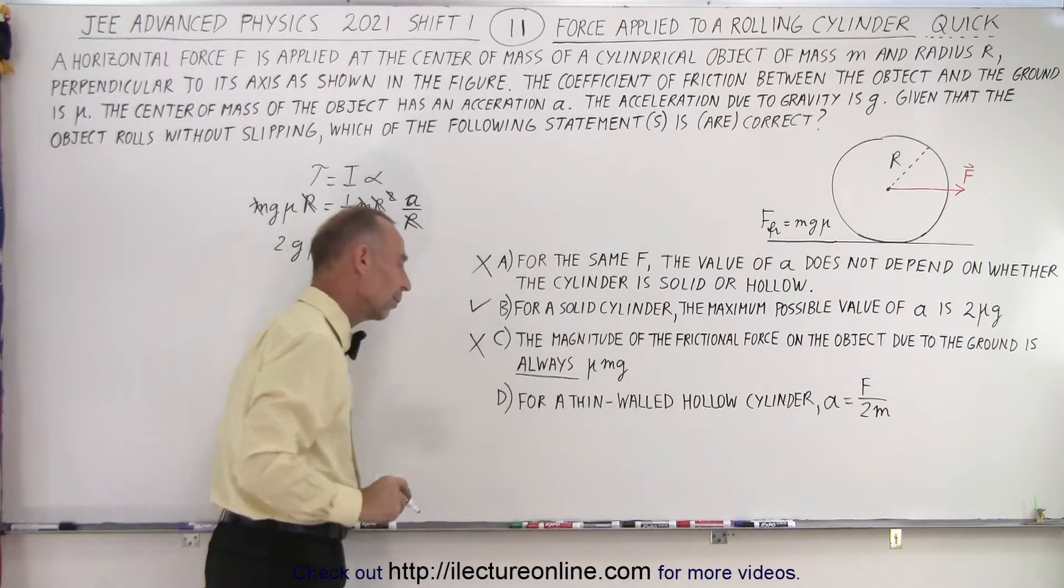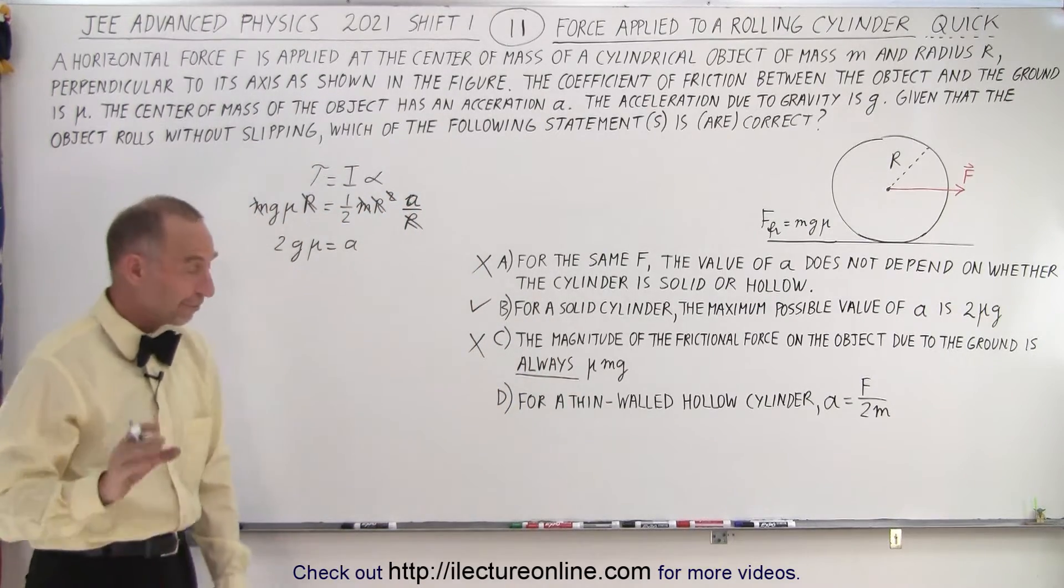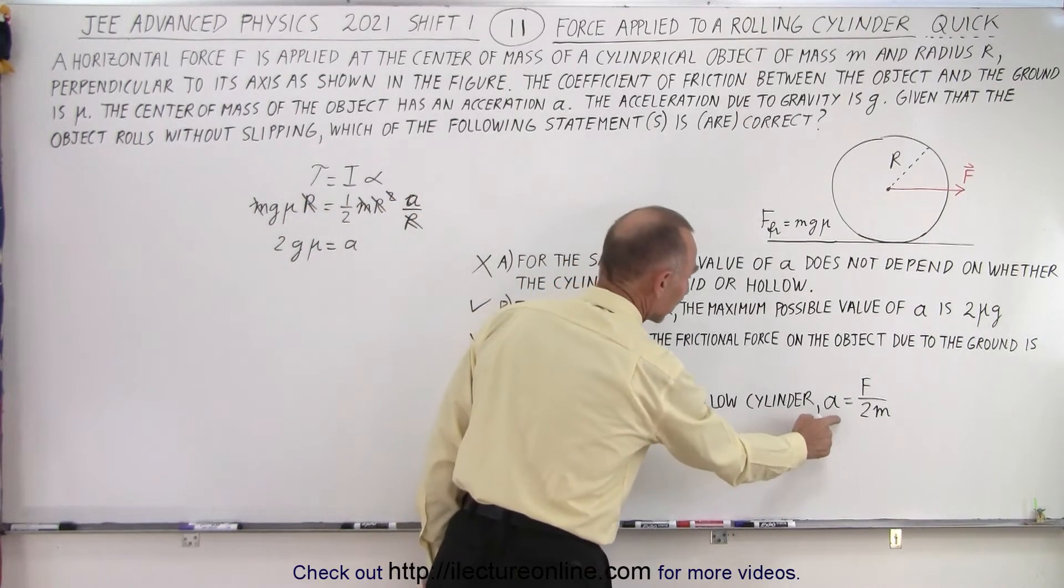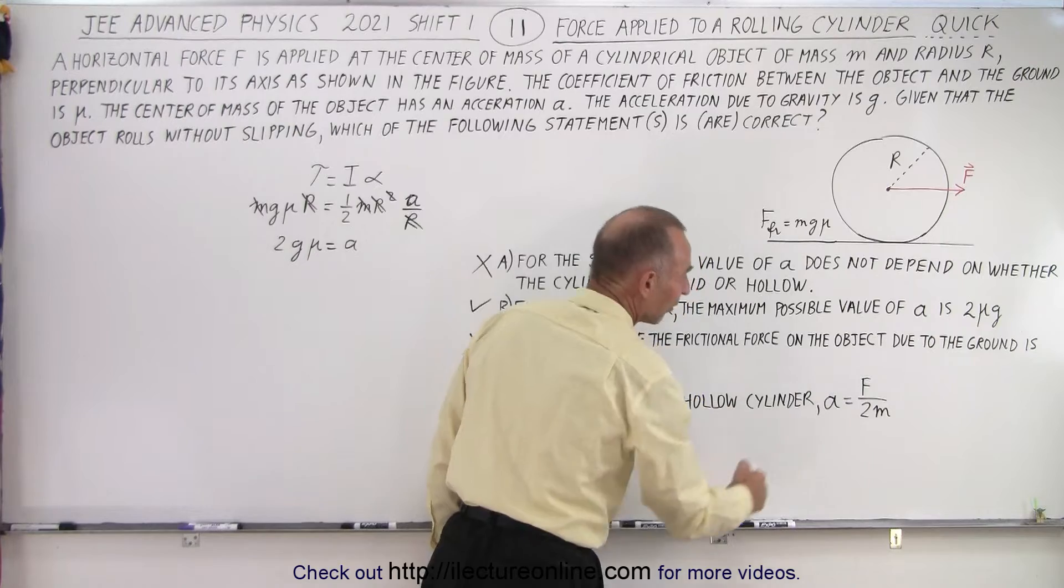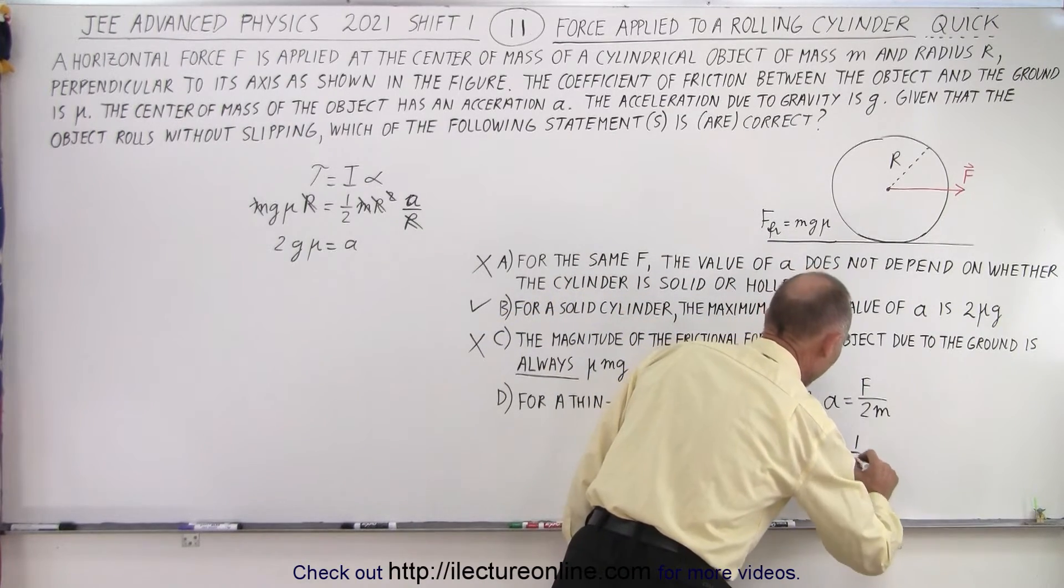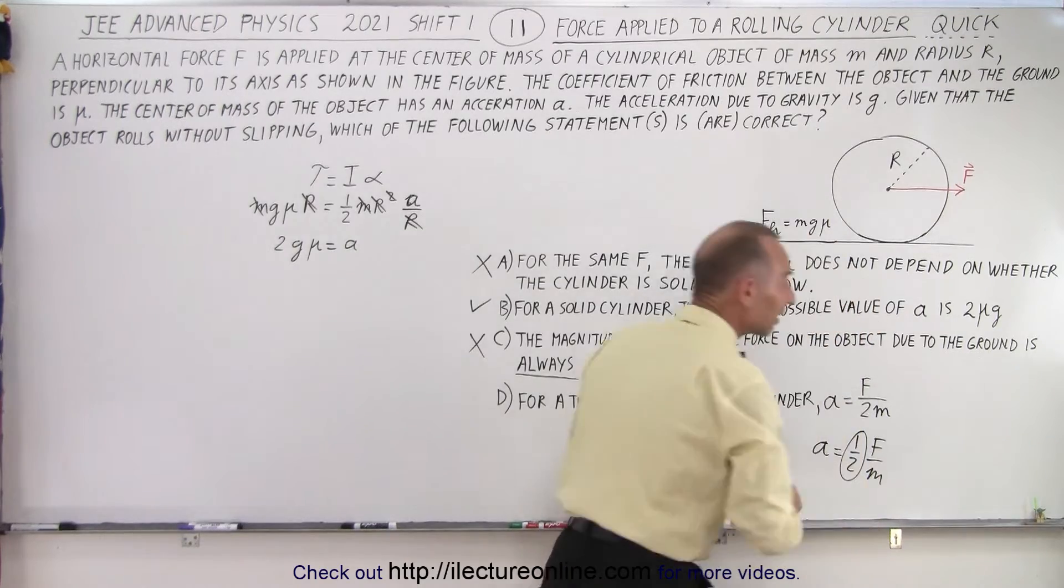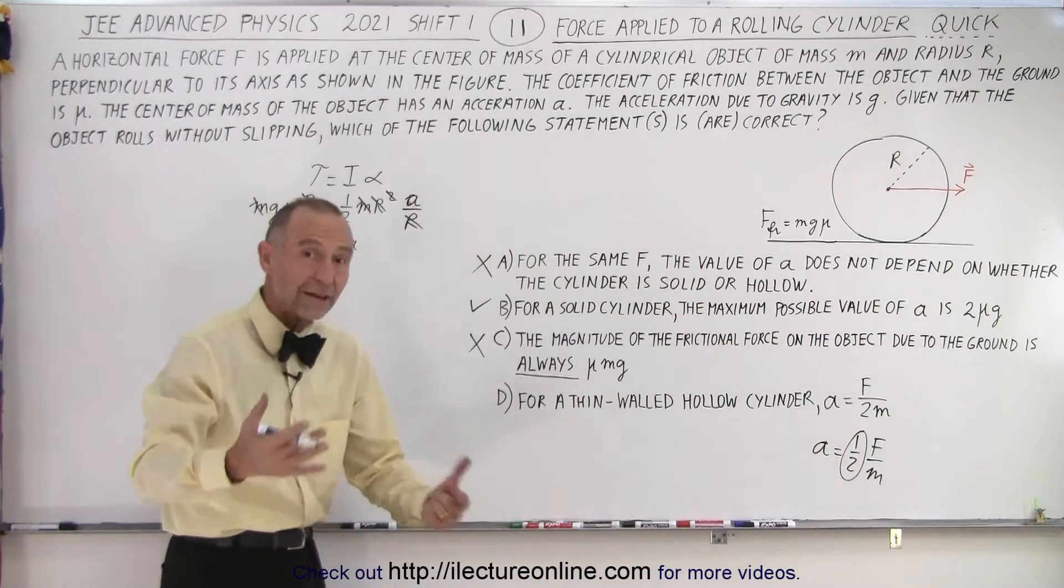And for the final one we have a thin walled hollow cylinder and they claim the acceleration will be half of 2m. So if you write this as a equals one half of f over m, that would be half the value that it normally is because normally a equals f over m.